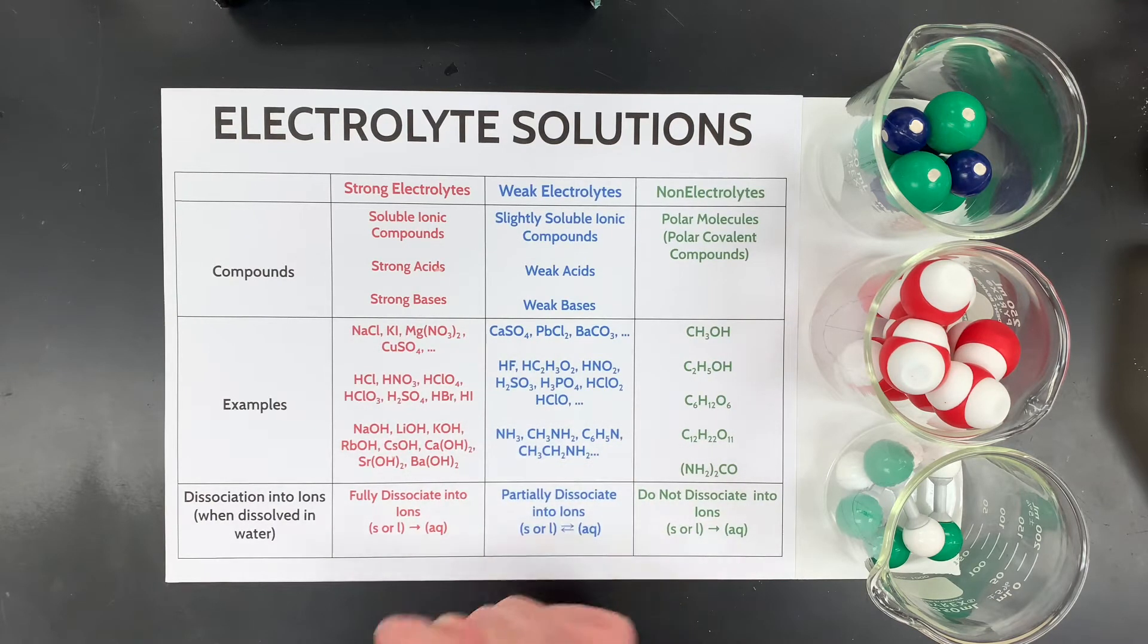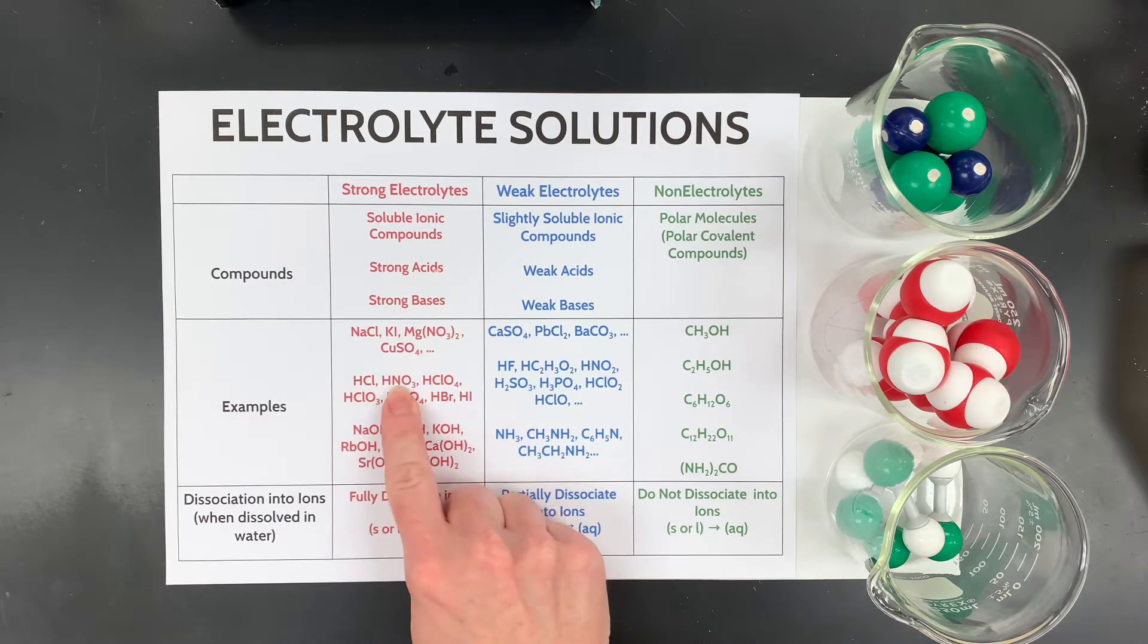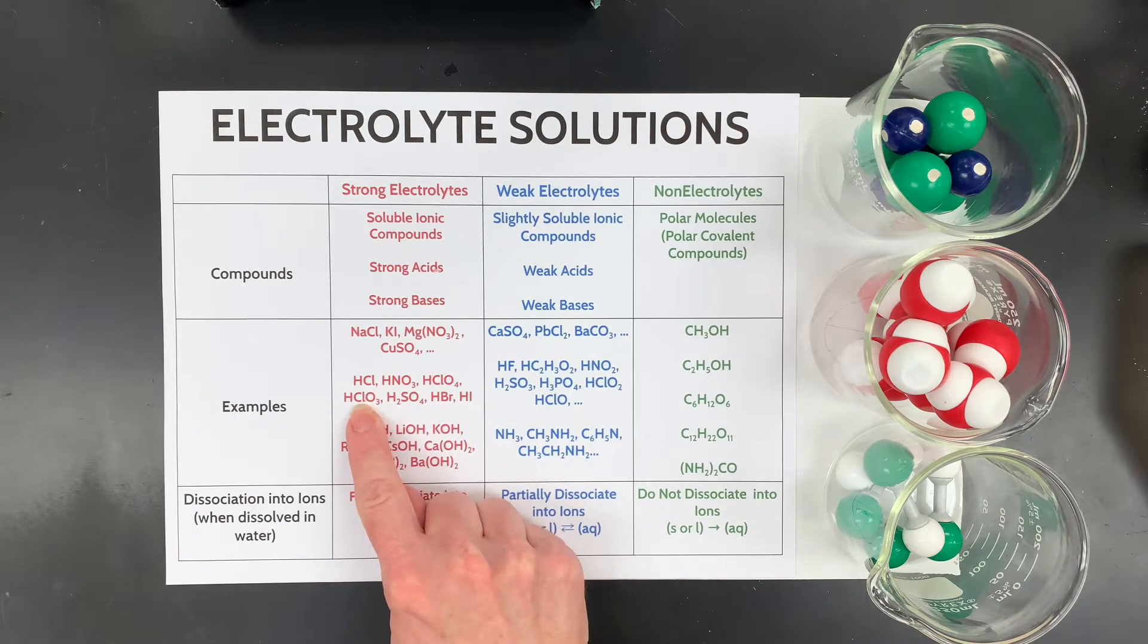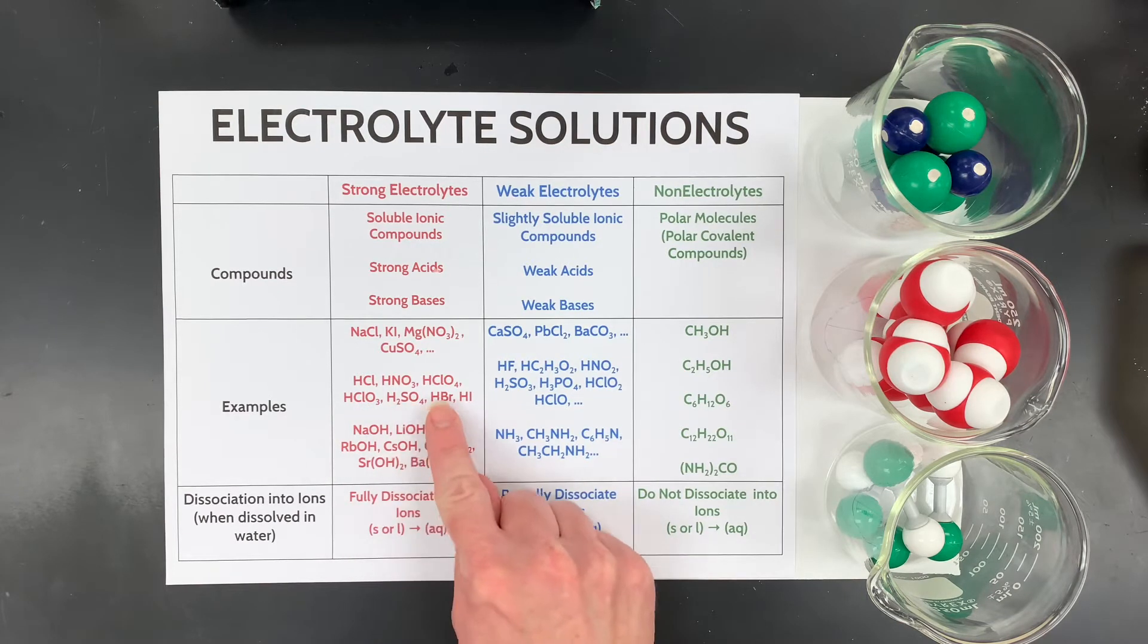This is the list of the strong acids. Some of you will have to actually memorize these: hydrochloric acid, nitric acid, perchloric acid, chloric acid, sulfuric acid, hydrobromic acid, and hydroiodic acid.